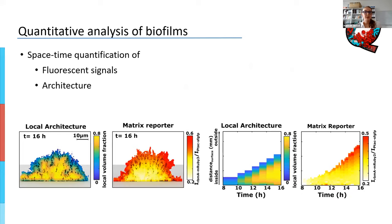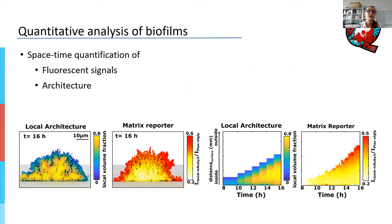What kind of properties can you quantify with BiofilmQ? Probably the simplest is fluorescent signals — you can measure how strong your fluorescence is in different areas of the biofilm or structure. You can also measure fluorescent ratios of different channels. Then we have the possibility to measure architectural properties. The first that comes to mind is density — how densely are my cells packed in the biofilm or in my structure? But also something like local height, local thickness, and roughness coefficients.